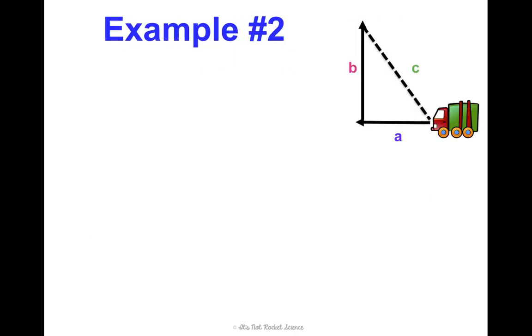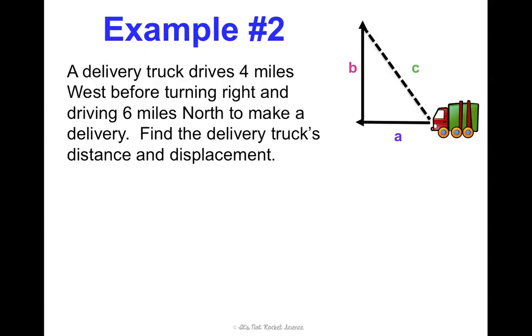Let's do an example of this, because I think that makes it the most simple to understand. And one thing I want to preface as we move into this is I'm not really a fan of plugging in and then rearranging from there, but I found that it's often simplest for most students to do that with this equation. So, we're going to do it for this equation, but we will not be doing that in the future. Example number two: a delivery truck drives four miles west before turning right and driving six miles north to make a delivery. Find the delivery truck's distance and displacement.